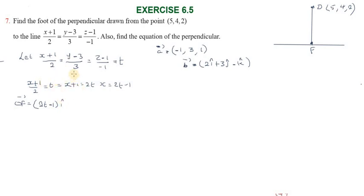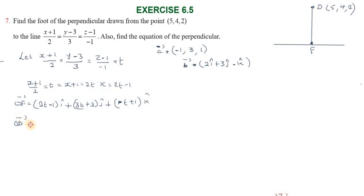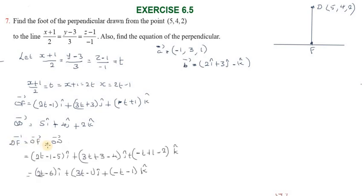The position vector of the foot F on the line is: OF = (2t−1)î + (3t+3)ĵ + (−t+1)k̂. The position vector of the given point D is: OD = 5î + 4ĵ + 2k̂. The vector DF = OF − OD.